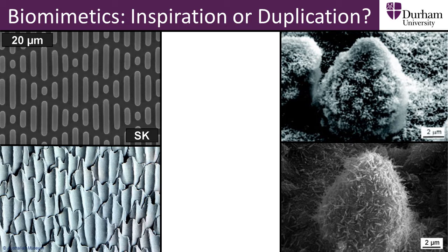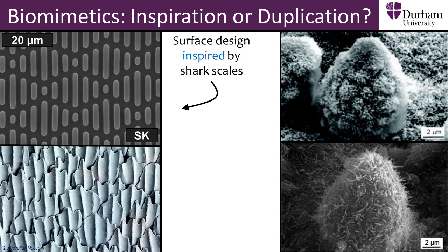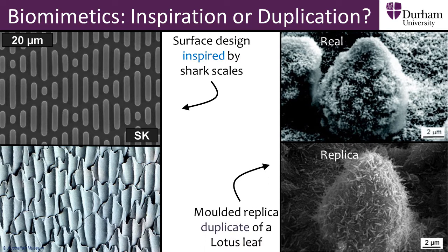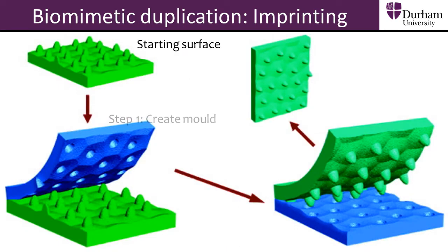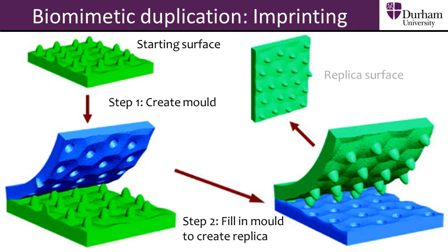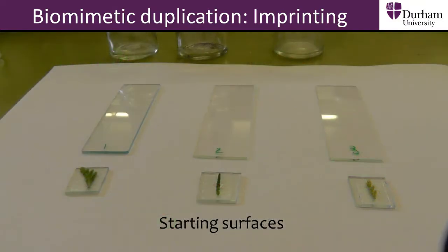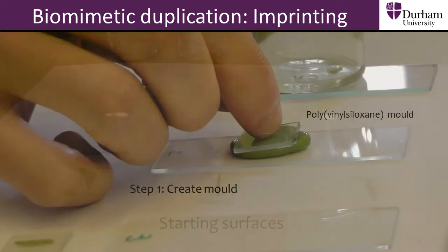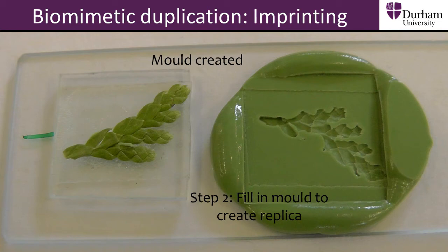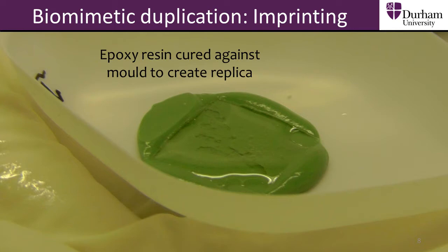The term biomimetics can mean different things. Sometimes it will refer only to the replication of the idea or theory behind a surface found in nature. Other times it will mean the creation of an exact duplicate of a surface by taking a mould of the original. Replicating a surface exactly using a mould can be done using various materials. A common material used is polyvinyl siloxane, which is the same material used to make dental moulds, as well as polydimethyl siloxane, also known as PDMS. First an imprint is taken creating a mould, and the replica surface is then created by curing a material against the mould, like an epoxy resin.